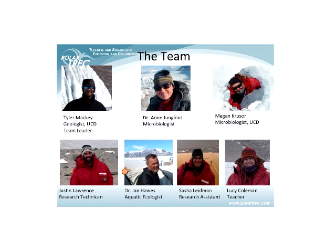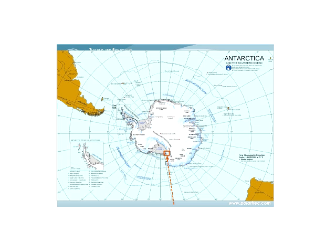Our journey began in California and we flew to New Zealand, which is a staging area for travel to and from Antarctica, specifically to McMurdo Station. From New Zealand we flew on a C-17 cargo jet to McMurdo, the largest station in Antarctica. We were lucky to arrive when we did because travel before and after that date was shut down for about a week on either side due to poor weather.